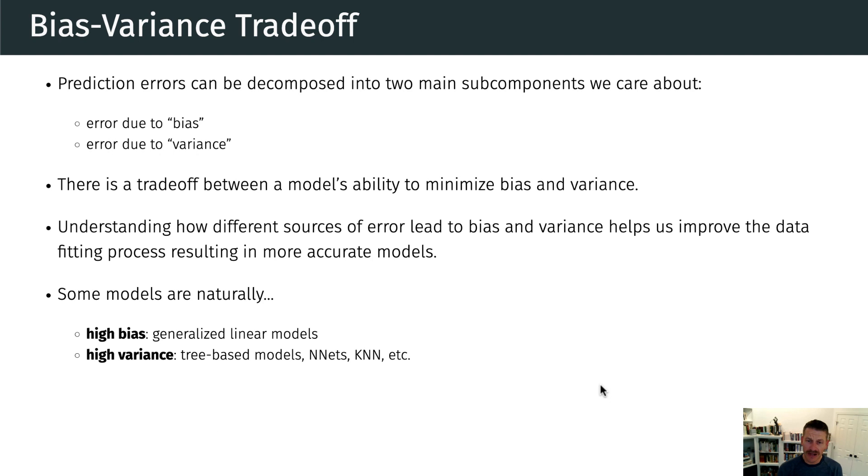Now, certain models are naturally high bias or have high variance. So models that are a little bit more strict or don't have a lot of flexibility, and we can think of this as being linear regression models, logistic regression models, even regularized models. Those have strong assumptions, and those strong assumptions make our model not that flexible. So they tend to be high bias.